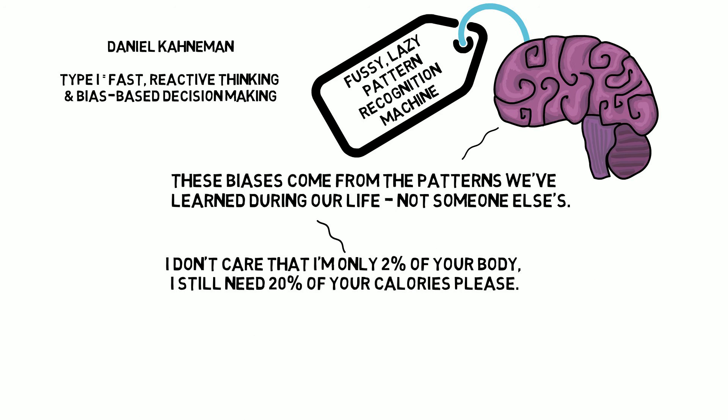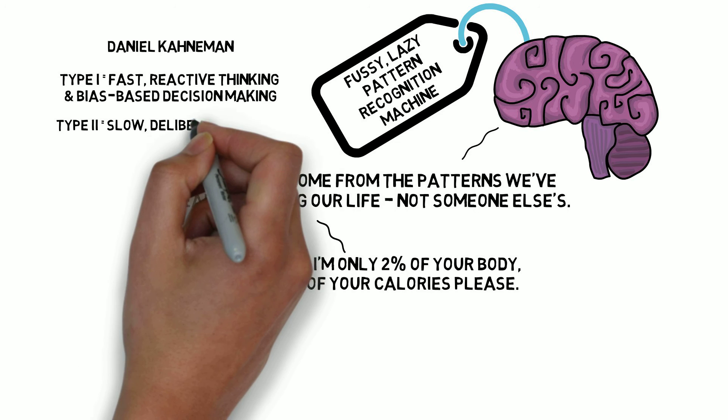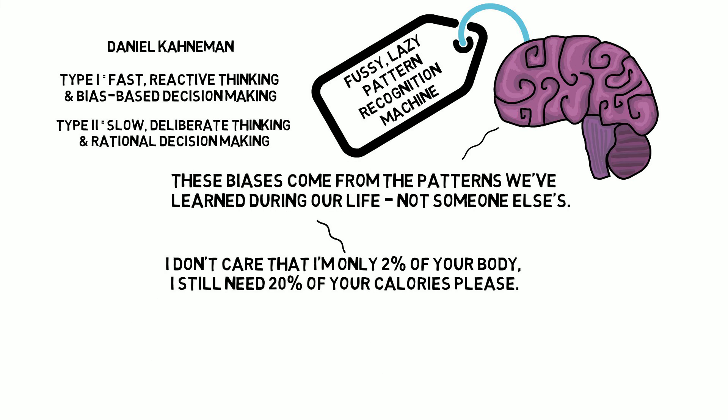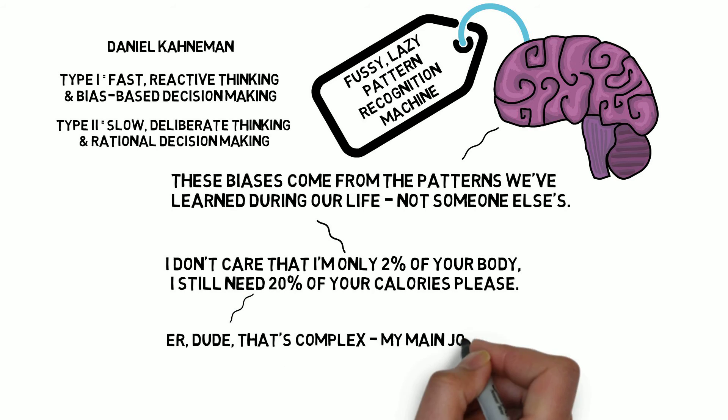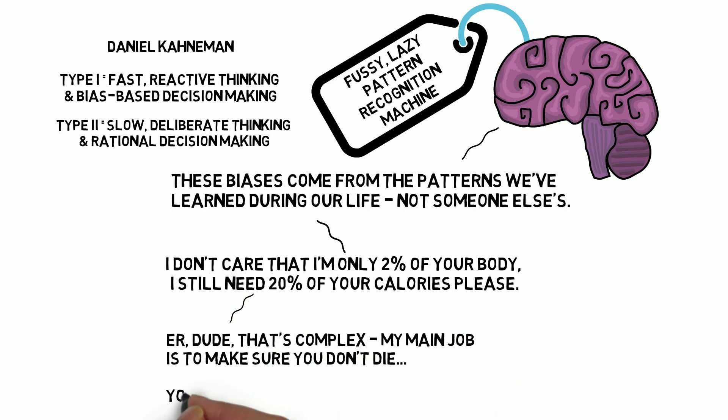Our brain requires a lot more energy to make decisions using what Daniel Kahneman refers to as Type 2 thinking. This is slow, deliberate thinking where we are a lot better at spotting biases and assumptions that can be leading our business or our life down a track we don't want to go.